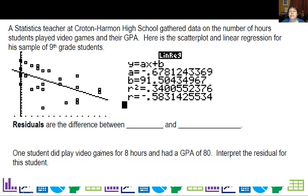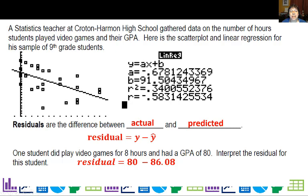So now we're going to go ahead and talk about residuals. These are the difference between the actual and the predicted. So you can say the residual equals y, the actual, minus y hat. That little hat means that's the predicted value. So we know in one case, one student did play video games for eight hours and had a GPA of 80. By the way, we always have to give you the actual. You can't normally calculate the actuals from the coordinates for that data point. But we can calculate the predicted. So we did, and we said it was 86.08, but the actual was 80.